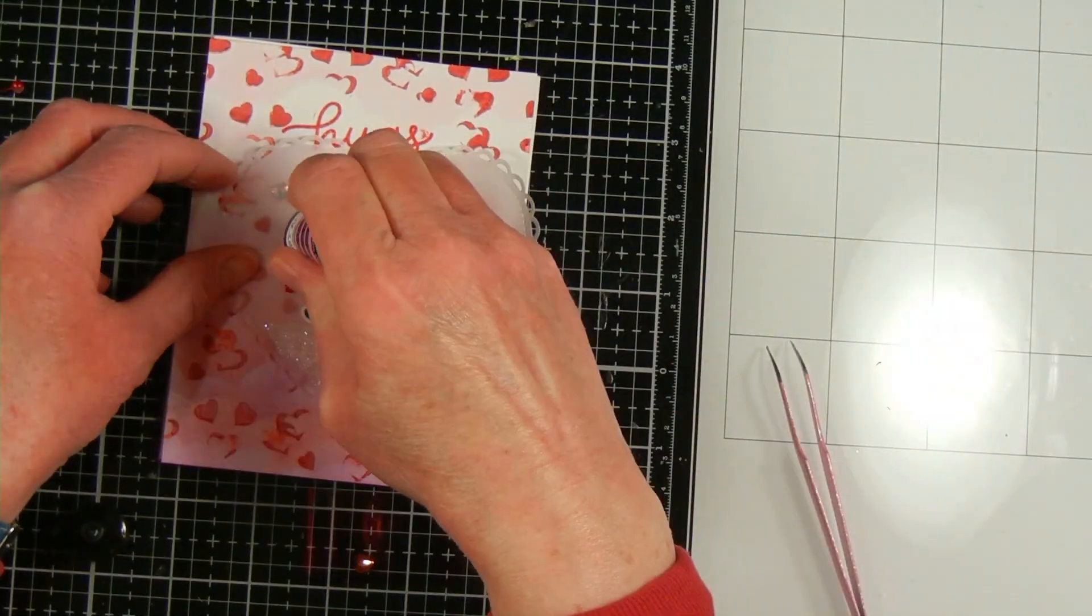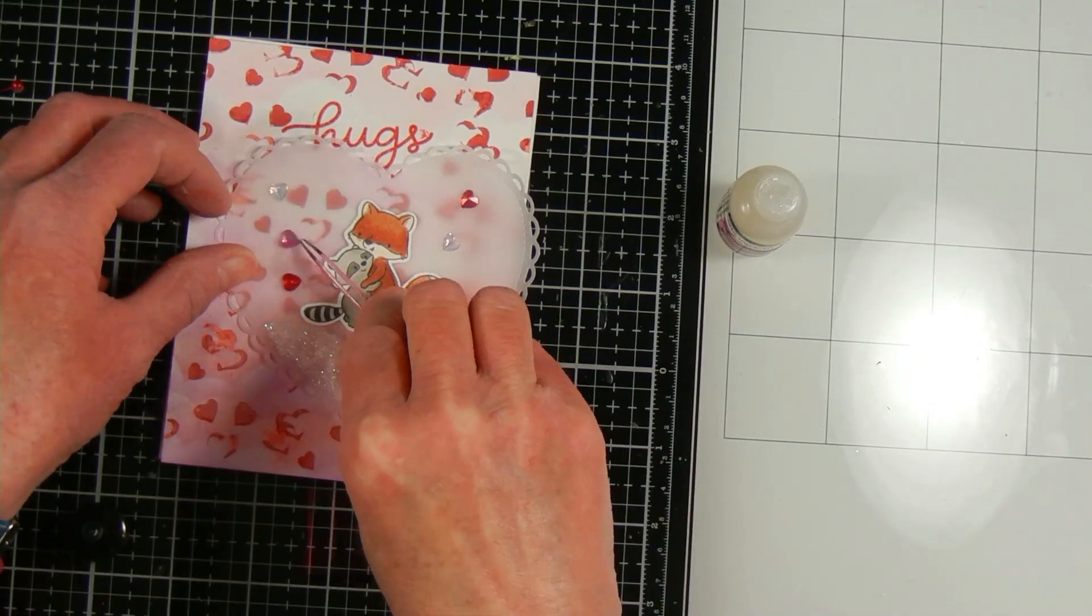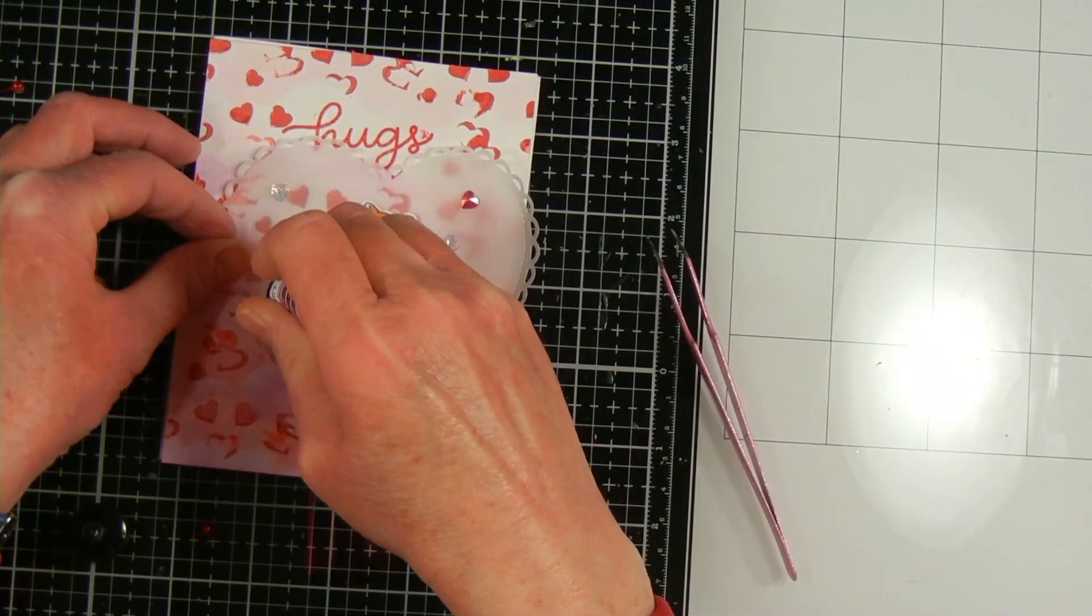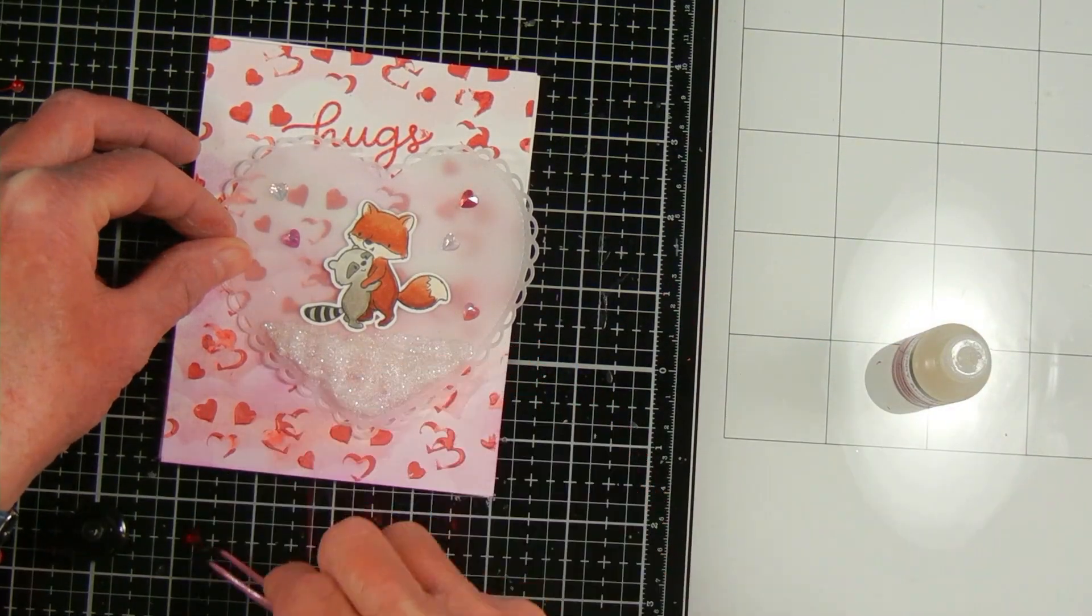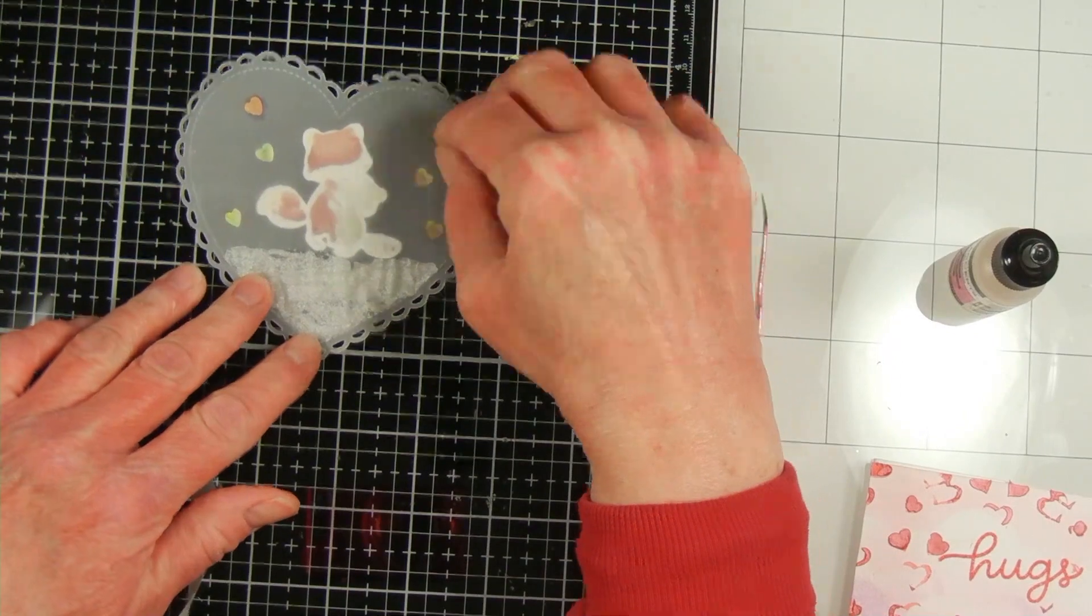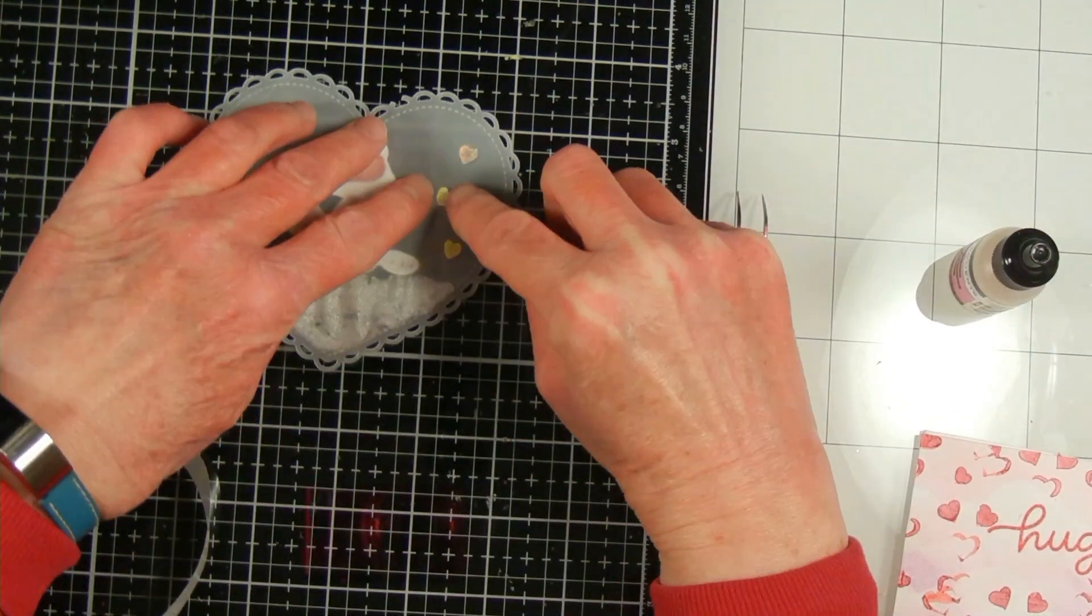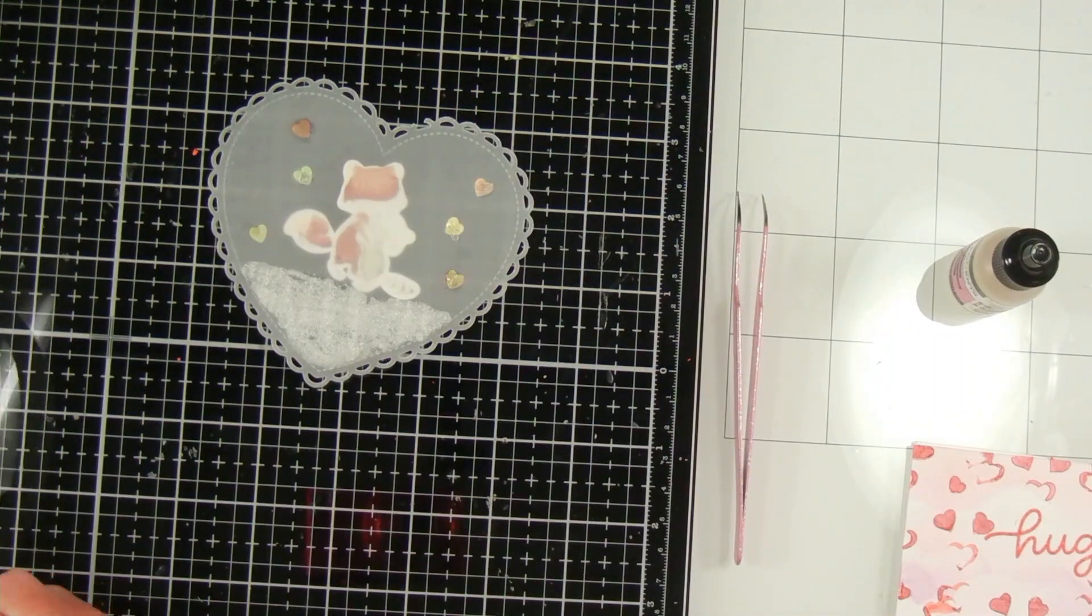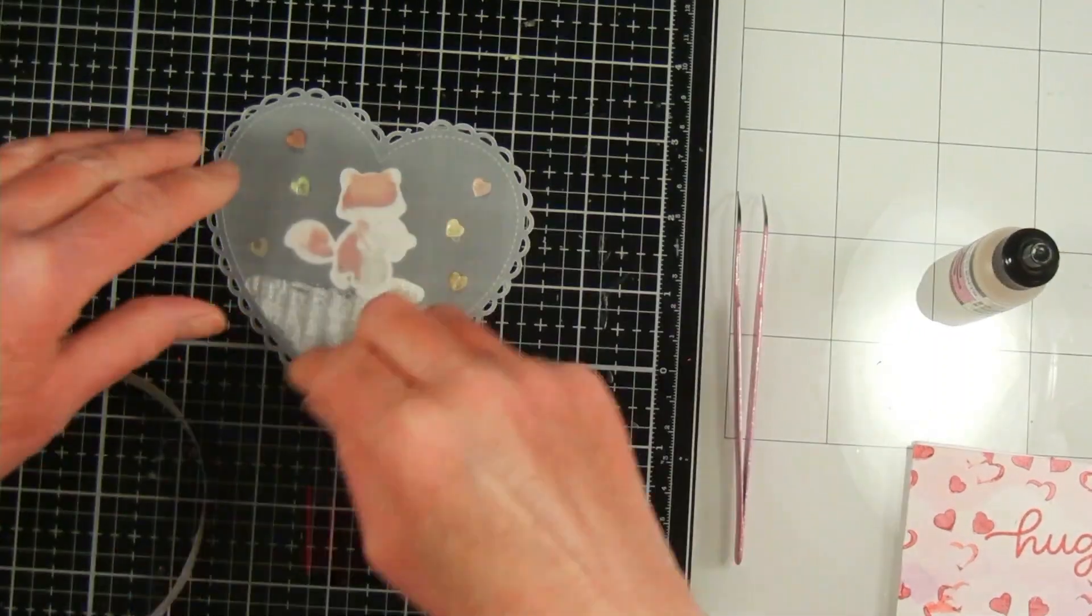And then to adhere my heart to my card panel, I just put some glue dots behind all the sparklets and the image of my fox and raccoon and behind the snow. Then I also added some Nuvo Deluxe glue behind my fox and where the snow is just for extra adhesive.